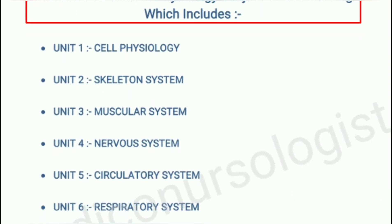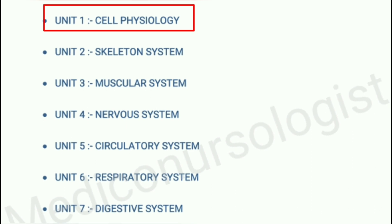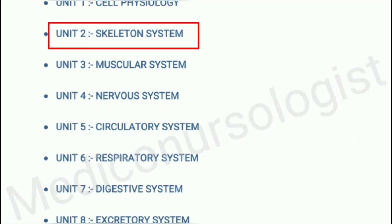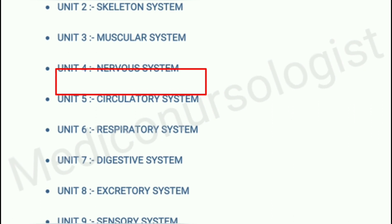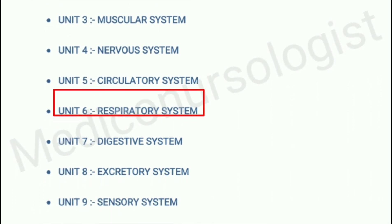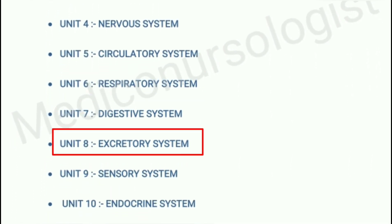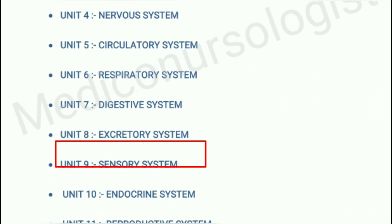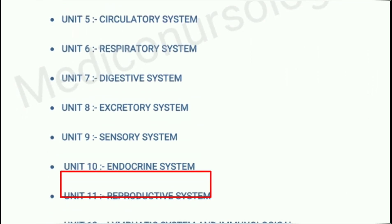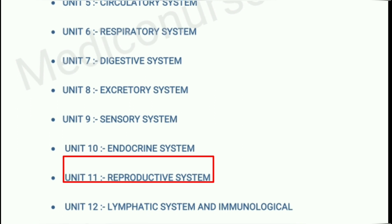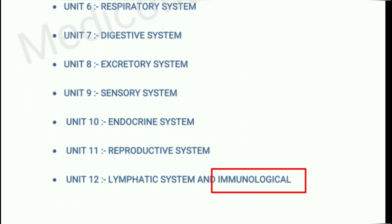Our physiology subject consists of 12 units: unit 1 cell physiology, unit 2 skeletal system, unit 3 muscular system, unit 4 nervous system, unit 5 circulatory system, unit 6 respiratory system, unit 7 digestive system, unit 8 excretory system, unit 9 sensory system, unit 10 endocrine system, unit 11 reproductive system with breast, and unit 12 lymphatic and immunological system.